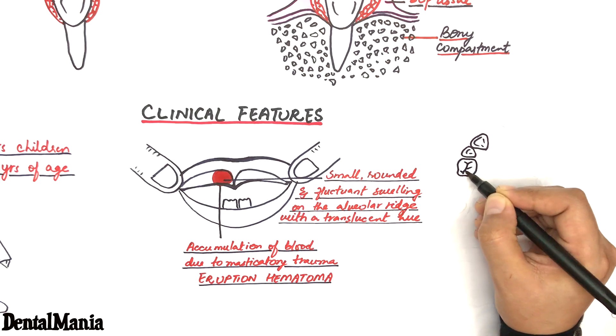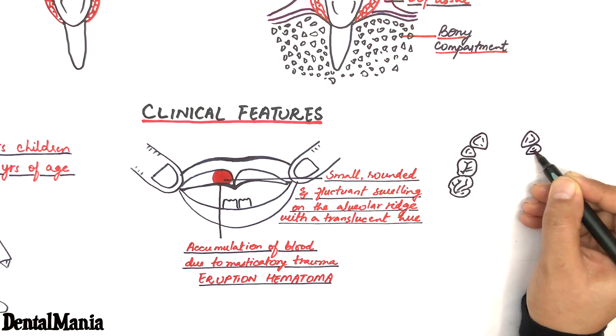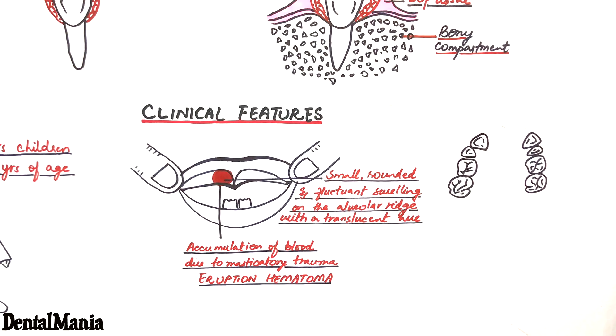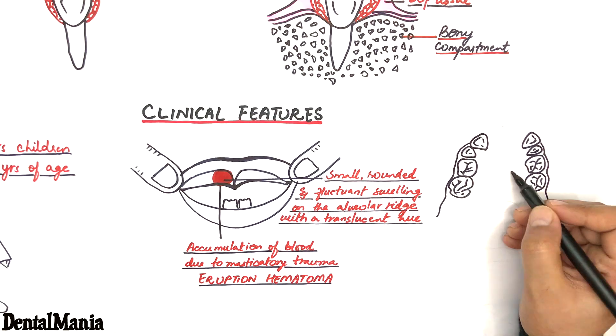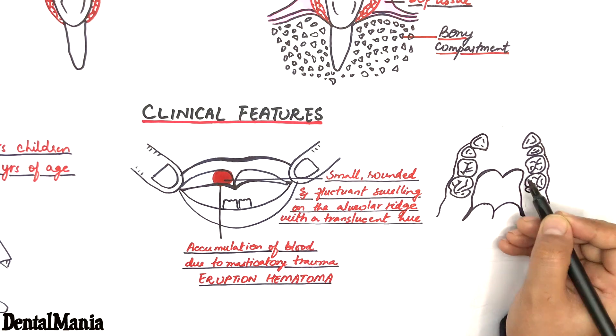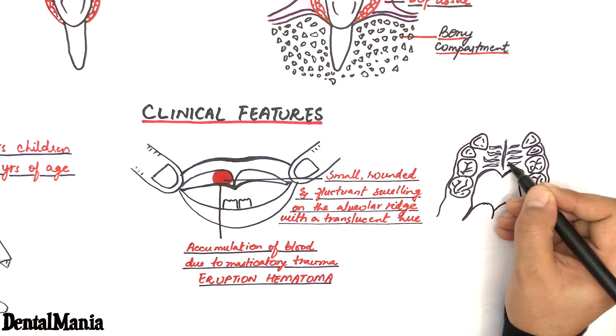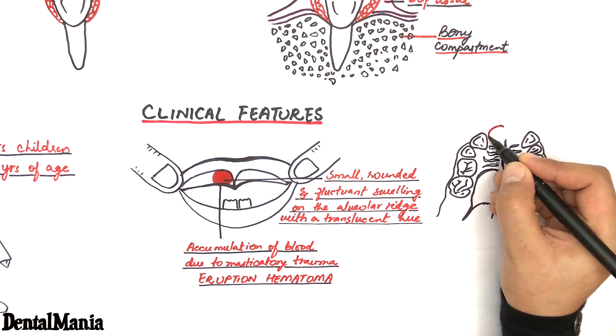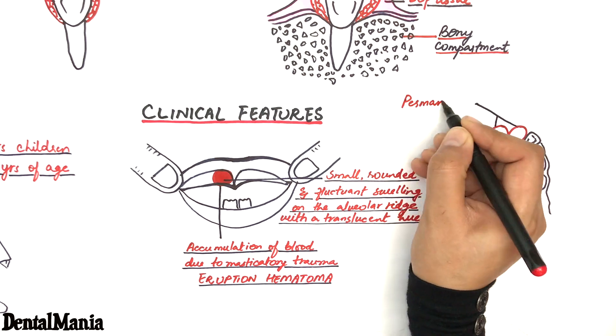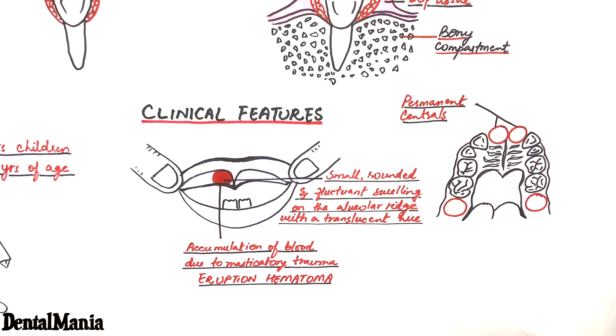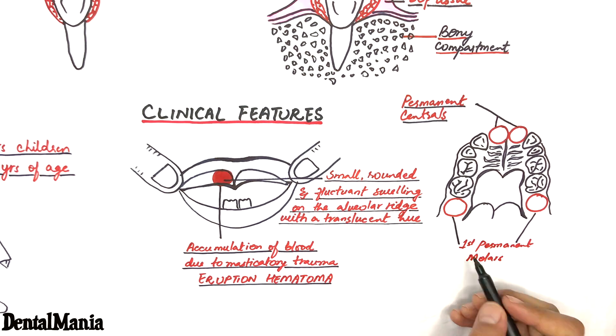The jaw most often affected is the maxillary jaw, and the teeth most commonly involved are the maxillary permanent centrals and permanent first molars.